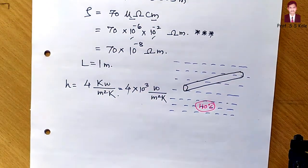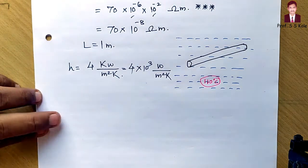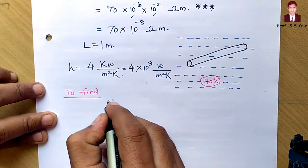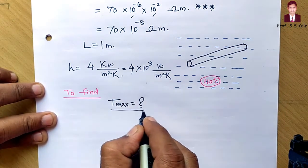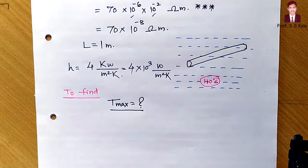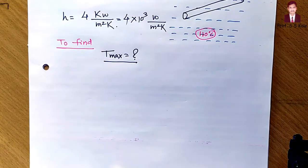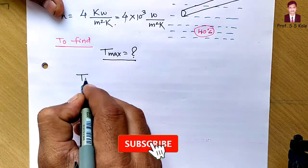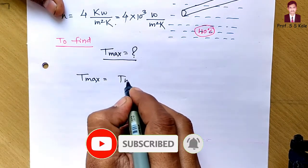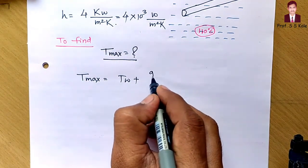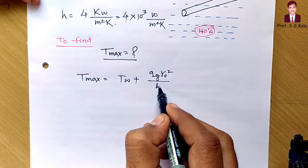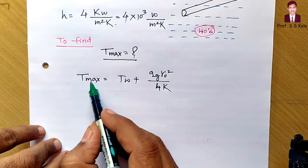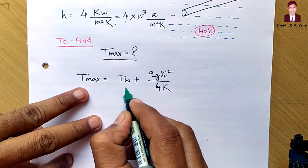The centerline temperature is the maximum temperature in the wire. The formula is T_max equals T_w plus qg times R_o-squared divided by 4k. To find T_max, we need T_w and qg, both of which are unknown. R_o is known from the diameter, and k is given.